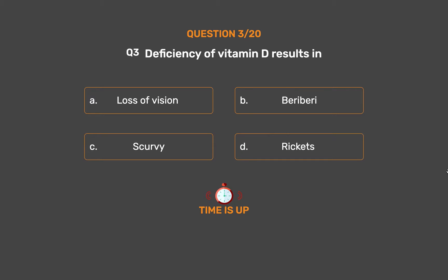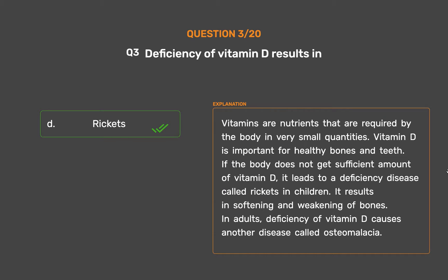The correct answer is Option D - Rickets. Vitamins are nutrients required by the body in very small quantities. Vitamin D is important for healthy bones and teeth. If the body does not get sufficient vitamin D, it leads to a deficiency disease called rickets in children, resulting in softening and weakening of bones. In adults, deficiency of vitamin D causes another disease called osteomalacia.